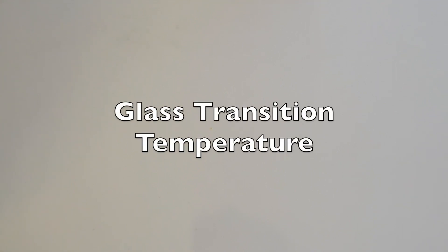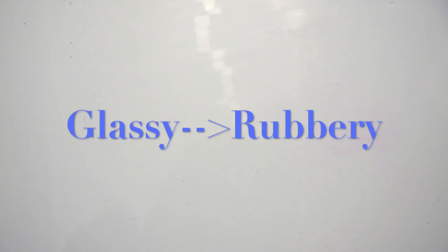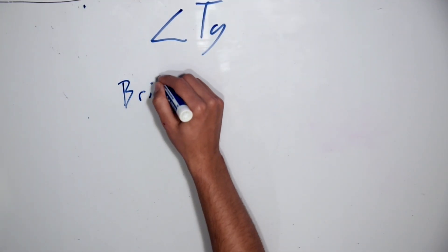However, polymers have one more characteristic temperature. This is called the glass transition temperature, or Tg. Let's look at chewing gum above and below its glass transition temperature. At Tg, the polymer will transfer from a brittle, glassy state into a rubbery state.